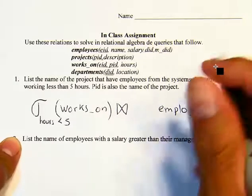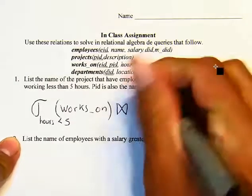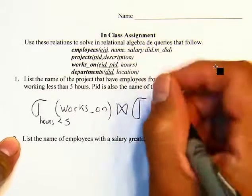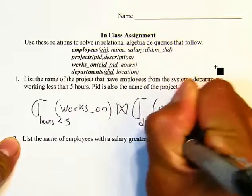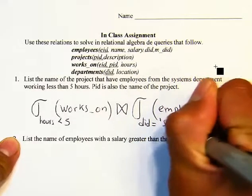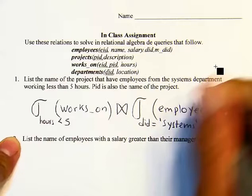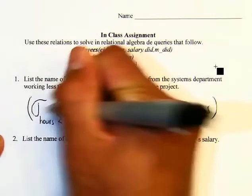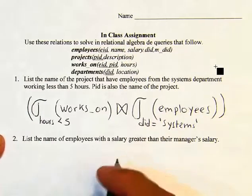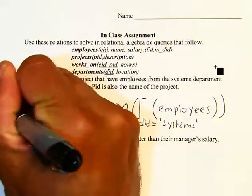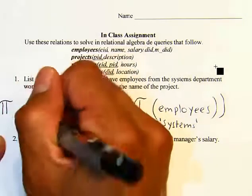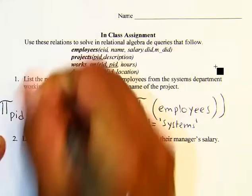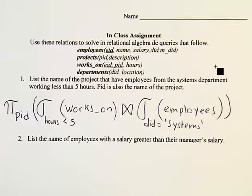We want employees from the systems department, so we select where department ID is 'systems'. From these results we just need the project number, so we project on PID. That will be the answer for the first query.